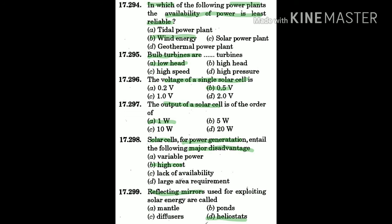Reflecting mirrors used for exploiting solar energy are called heliostats. Question 300: For satellites, the source of energy is — the answer is C: solar cell.